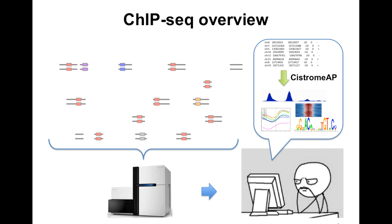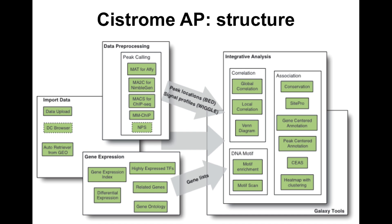Using Cistrome AP, one can process the ChIP-seq data and perform integrative analysis for functional studies. The functions of Cistrome AP can be divided into three categories: data preprocessing, gene expression analysis, and integrative analysis.